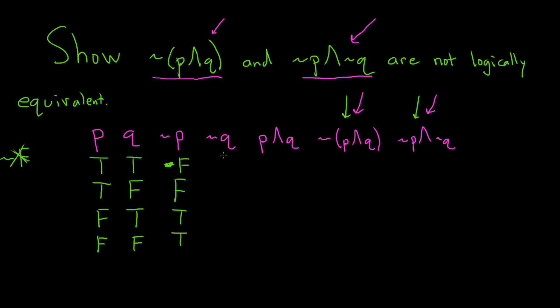Now let's look at ~q. So we're just going to take q and just write down the opposites. So false, true, false, true. Just writing down the opposite of each.